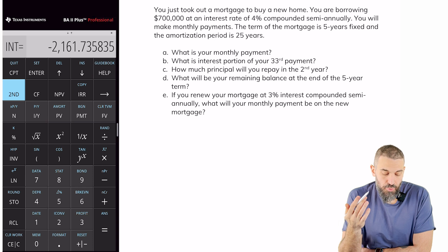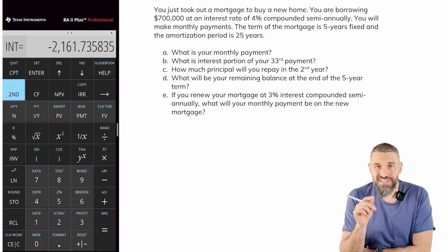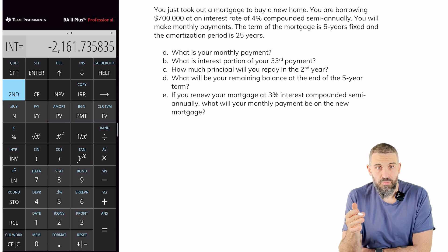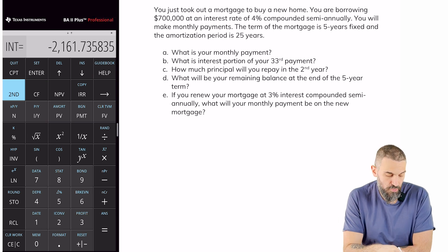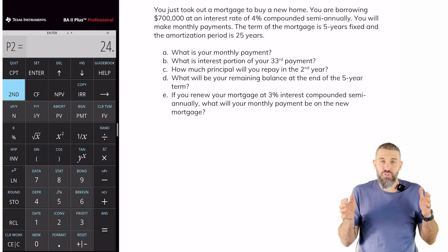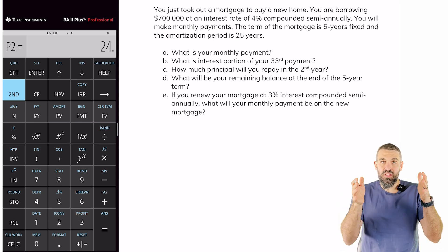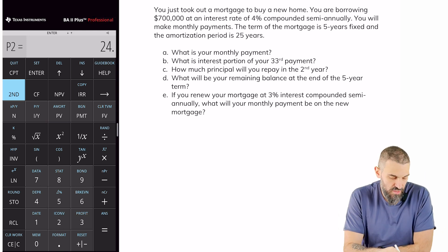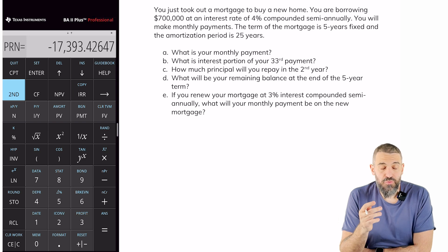The next question asks how much principal will you repay in the second year. This one is a little different — we need principal instead of interest, and for a collection of payments rather than a single one. The second year is made up of 12 payments: the 13th through the 24th, because the first year is payments 1 through 12. So go back to second amort. Set P1 = 13, enter, down, P2 = 24, enter. I've now made an interval from 13 to 24 and the calculator will give information for that range. Scroll down — the amount of principal repaid in the second year is $17,393.43.